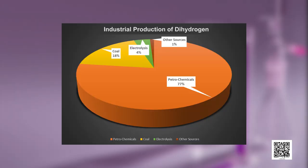After seeing the various methods of commercial production, let us look at the industrial production of hydrogen. From the figure you can see that 77 percent of dihydrogen is produced from petrochemicals, 18 percent is produced from coal, 4 percent is produced from electrolysis, and 1 percent is produced by other methods.